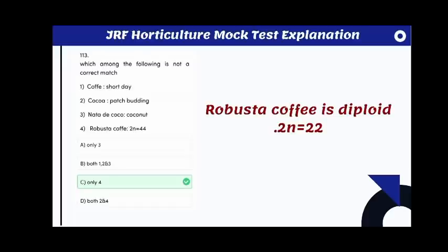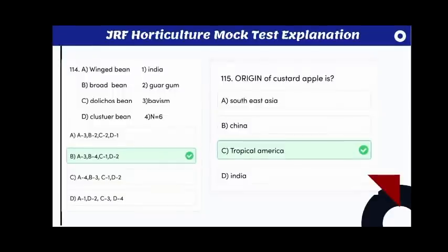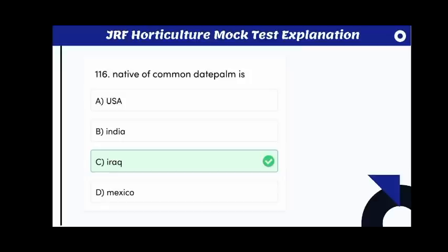Optimum pod value for cocoa beans is 12 — 12 pods to get 1 kg of dry beans. Which among the following is not a correct match? Robusta coffee with diploid chromosome number 44 is incorrect; robusta coffee is diploid with chromosome number 22. The origin of custard apple is tropical America.